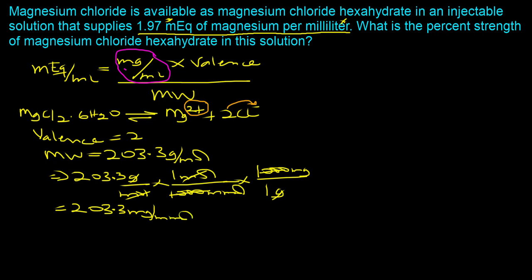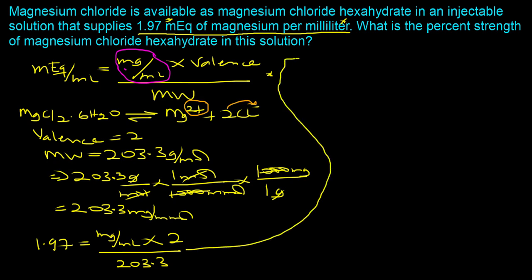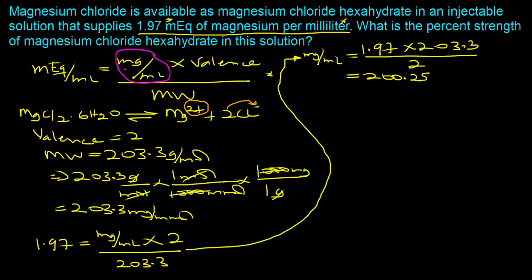Now that we have all the information, we substitute into the original equation. Milliequivalents per milliliter is 1.97, which equals milligrams per milliliter times the valence of 2, divided by the molecular weight of 203.3. Solving for milligrams per milliliter: it equals 1.97 times 203.3 divided by 2, which gives us 200.25 milligrams per milliliter.